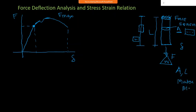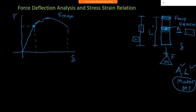The force-deflection curve represents a specific geometry (area and length) and a specific material. We want to determine the material property, not the geometric property. So we must remove the dependency on area and length from the curve - this is a process of normalization.